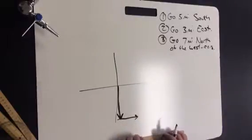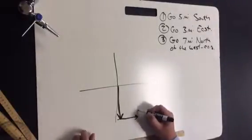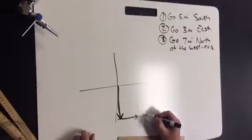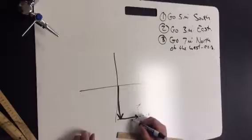Then it says go seven miles north of the west axis. Well, there's no axis here, so I have to draw one. And that's north, that's south, that's east, that's west.